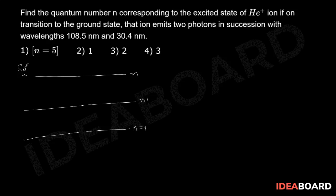The atom undergoes de-excitation from the nth orbit to the ground state via two transitions: from n to n dash, and from n dash to the ground state. During these two transitions, two photons are emitted.